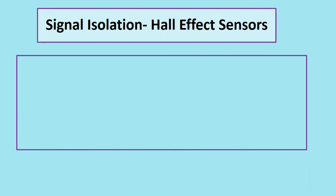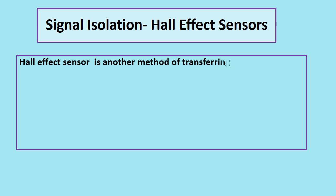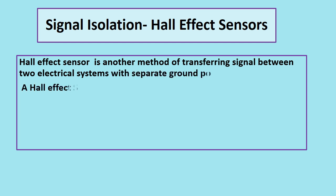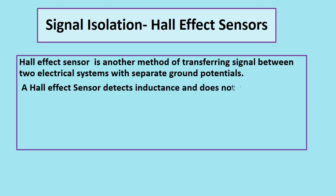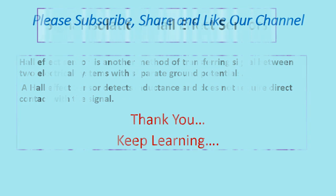The Hall effect sensor is another method of transferring signals between two electrical systems with separate ground potentials. A Hall effect sensor detects inductance and does not require direct contact with the signal.